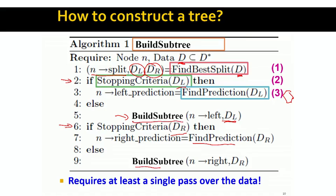So this is the basic idea of how to do this. What I will do next is slowly go through these important functions and address how we implement them and how we think about them. In particular, we will start with the first function which is find best split. The question is: how do we find a good split in the data? Which means, how do we identify the feature and the value on which to split?